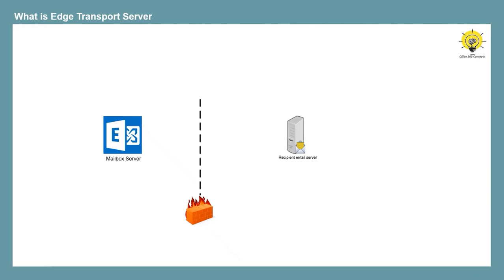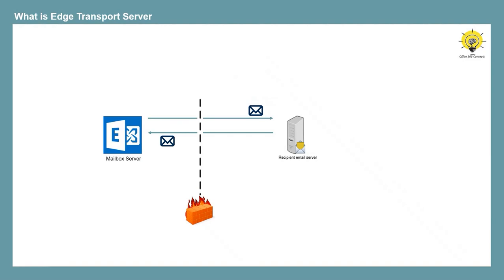In an on-premise Exchange organization where Edge Transport Server is not deployed, all external inbound and outbound email flow is handled by the mailbox server in Exchange 2016 and Exchange 2019. When users send emails to the internet, the mailbox server connects to every email recipient server over port 25. And whenever an external user sends email to on-premise users, the sender's email server connects to the on-premise mailbox server. So that means the on-premise mailbox server has to be exposed to the internet, because it has to communicate with external email servers in order to send or receive emails.